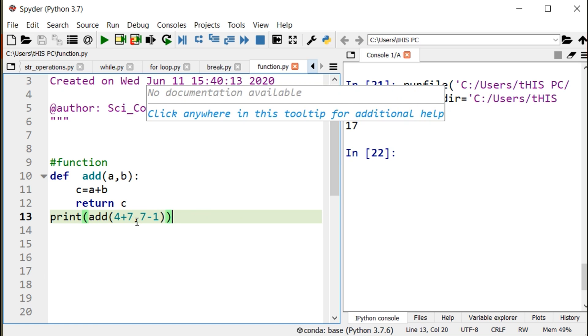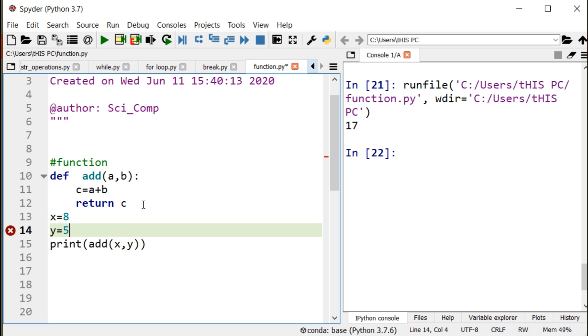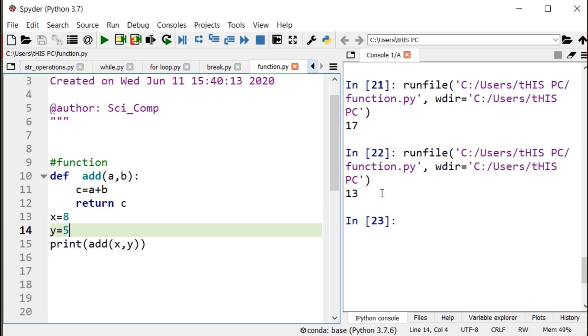The third case is when we are using the actual argument as a variable. Our actual arguments are variables x and y. Initially, we assign x a value of 8 and y a value of 5. I run it, and the answer is 13. This shows how we pass actual parameters.